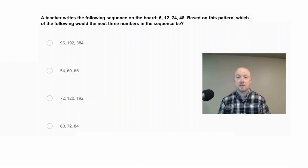A teacher writes the following sequence on the board, 6, 12, 24, 48. Based on this pattern, which of the following would the next three numbers in the sequence be? Okay. So what we want to teach the students here is to recognize the difference between an arithmetic sequence and a geometric sequence. In an arithmetic sequence, we're going up or down by the same amount by addition or subtraction.